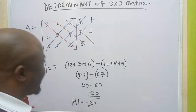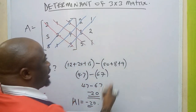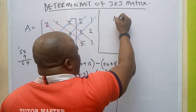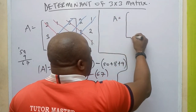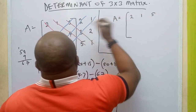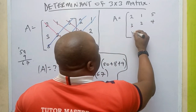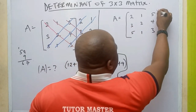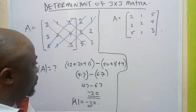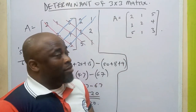Let's try the second method and see if we get the same answer. We are still going to get the same answer because we want to confirm. So we have the determinant of the same matrix: 2, 1, 5 in row one; 3, 2, 4 in row two; and 5, 1, 3 in row three.